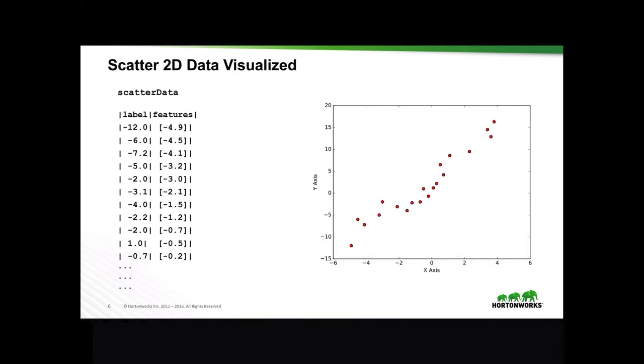Let's go over another example, this time with some sample code. Let's say you have a scatter data data frame that has already been pre-initialized with the following labels and features, which can be visualized on this x and y axis.